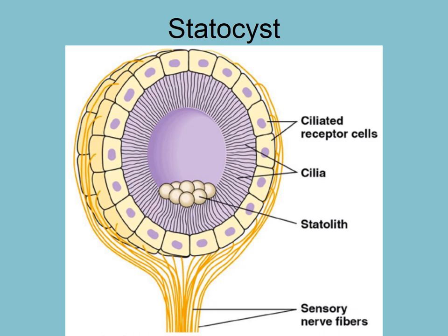This is called a statocyst. When you talk about stasis, it means staying the same — this will help a jellyfish remain at the same orientation within the water column. We have a whole lot of nerve cells with nerve fibers going off to the nerve net within the jellyfish. They don't have a brain; they have a neural network. They have lots of these nerves going off from the statocyst to the neural network.